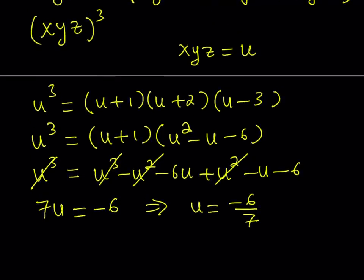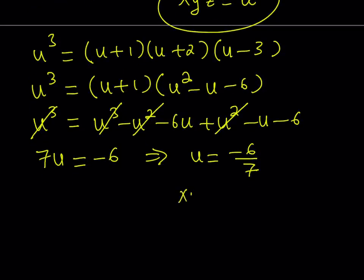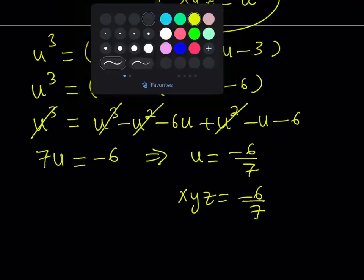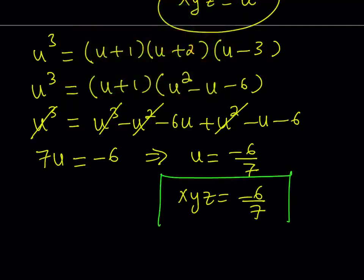Now, what is u equal to? u is equal to xyz. So this means xyz is equal to negative 6 over 7. Now, this is an important finding because we're going to use it in our system.